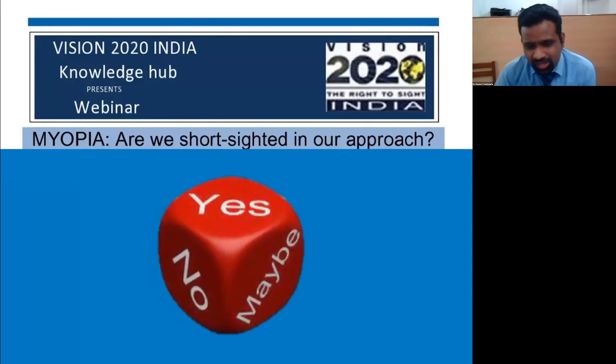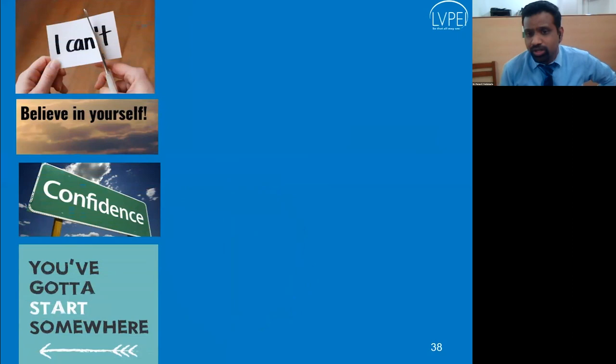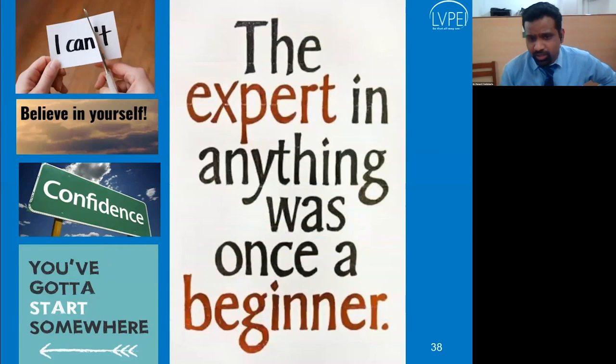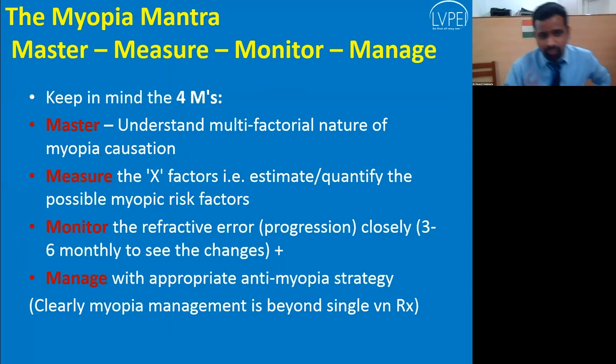Returning to the opening question — 'Are we short-sighted?' — Dr. Pavan says perhaps not: we are discussing and managing myopia. But we need self-belief and confidence to start. Nobody becomes an expert in one shot. Confidence is contagious — catch it and spread it. Myopia is another pandemic: if we don't act now it will get worse.